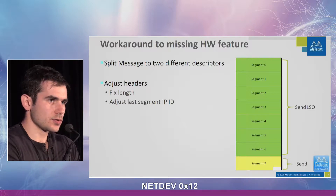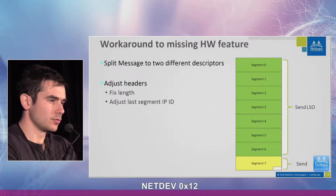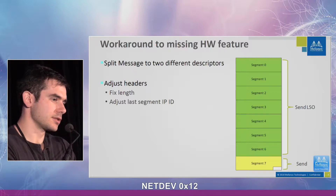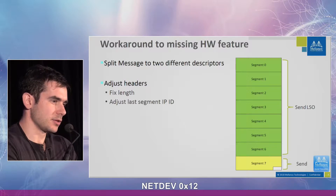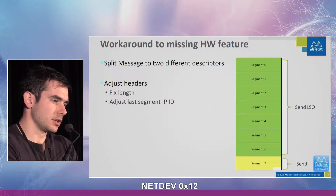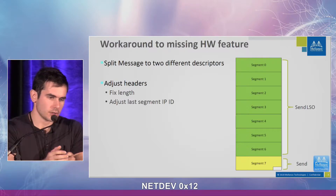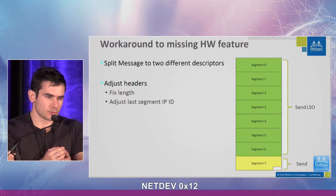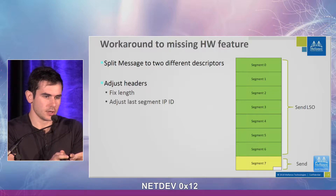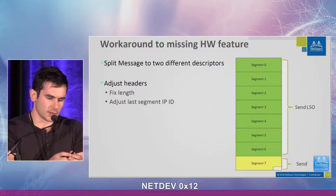The workaround we chose is to split the large UDP GSO packet into two hardware descriptors. One of them is a send LSO — the same that sends TCP LSO messages — and another is the remaining segment, which has a different length, sent using a separate descriptor. So essentially two descriptors are used to send a single GSO offload request, and the headers are adjusted accordingly to fit both cases.